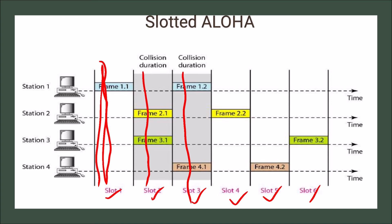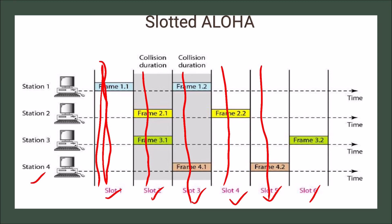In slot 4, only station 2 sends frame 2.2 at the initial phase, so there is no collision. In slot 5, only station 4 sends frame 4.2, so again there is no collision. In the last slot, station 3 sends frame 3.2 — also no collision.